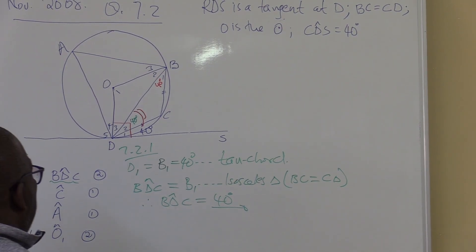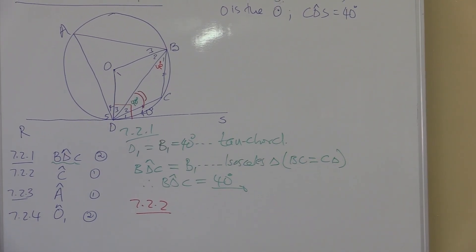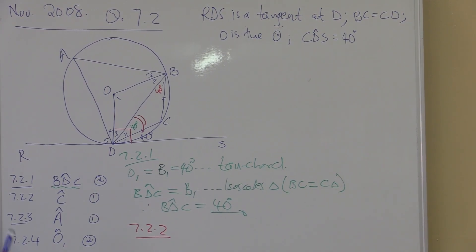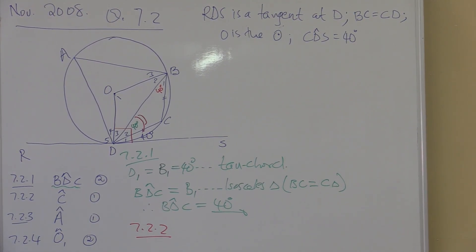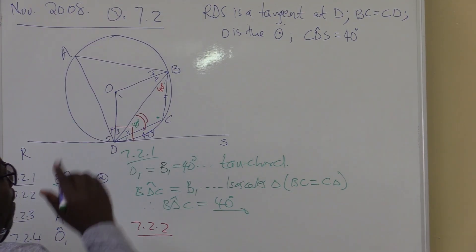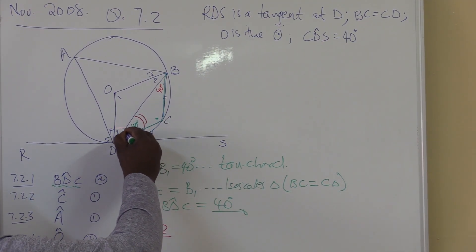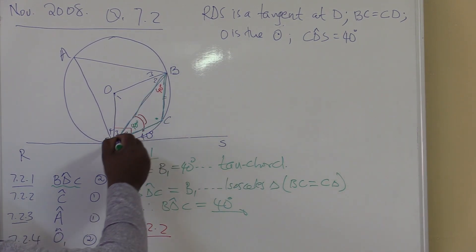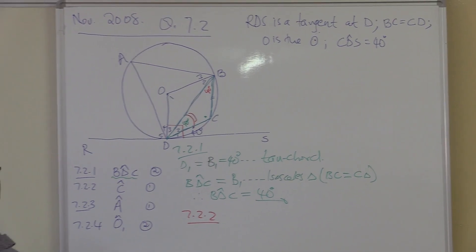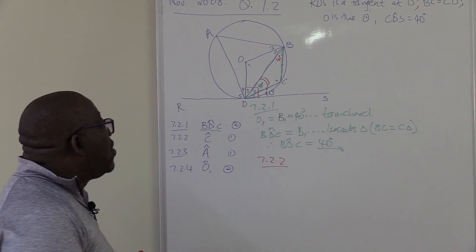Number two, 7.2.2: find the value of angle C. This is where angle C is — we're looking for this angle. What do we call this? It's a triangle — there are three angles here. What do you know about the sum of interior angles of a triangle? This is grade 8 but comes out in grade 12. They are equal to 180 degrees. So angle C plus angle B1 plus angle D2 equals 180 degrees. The reason: sum of interior angles of a triangle.